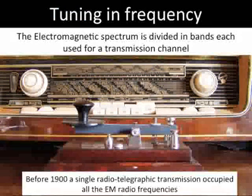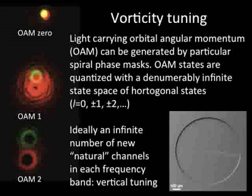In 1909, the tuner was patented and sent to production. Nowadays, information is mostly exchanged through wireless channels and the rapid increase in the use of mobile devices has led to a congestion of the available radio bands, even after the application of dense coding and channel sharing techniques. Therefore, it is important to develop new methods to utilize the electromagnetic spectrum better. One way is to exploit fundamental physical properties of the electromagnetic field, such as the orbital angular momentum.